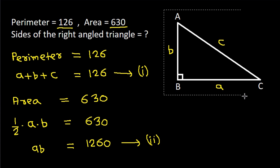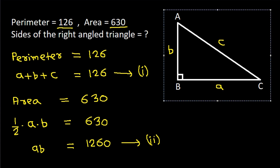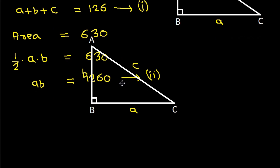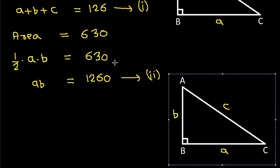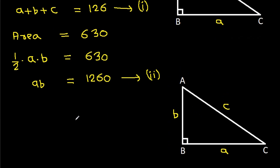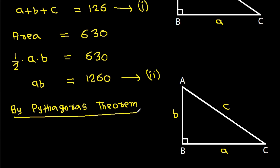Now by Pythagoras theorem, we can write equation 3: A squared plus B squared is equal to C squared. Suppose it is equation 3.